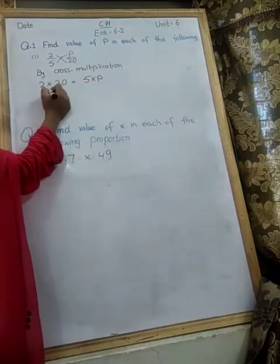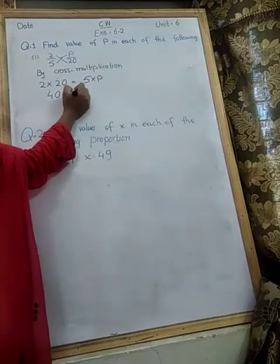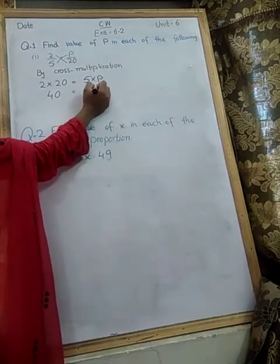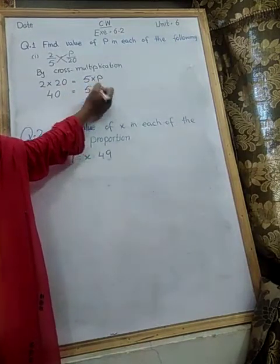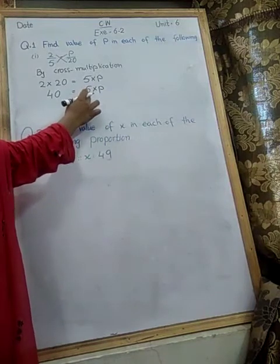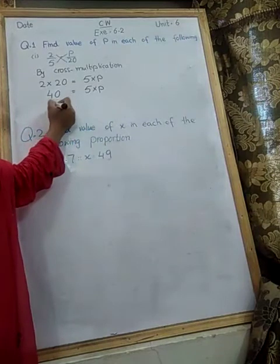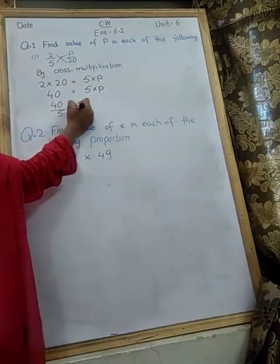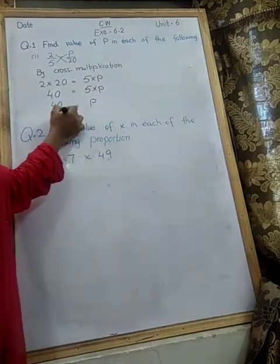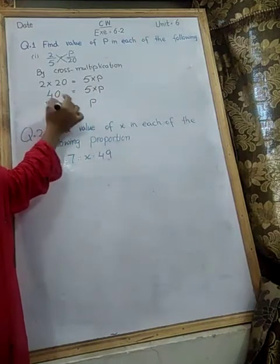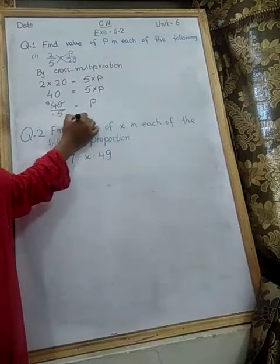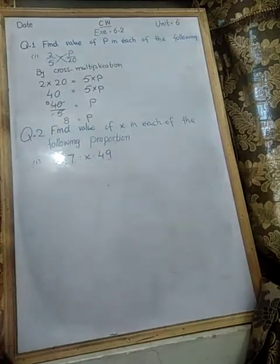2 times 20 is 40, so 40 equals 5 multiplied by P. Now we have to find the value of P. What will we do here? Divide 40 by 5 equals P. 40 divided by 5 equals 8. So what is the value of P? 8 equals P. You will complete all the parts.